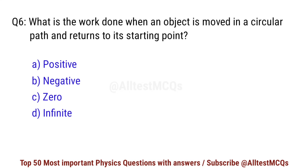Question No. 6. What is the work done when an object is moved in a circular path and returns to its starting point? Right option is C. Zero.